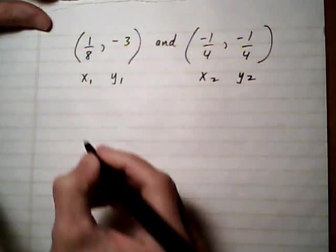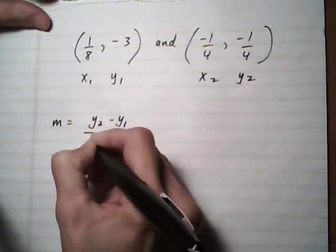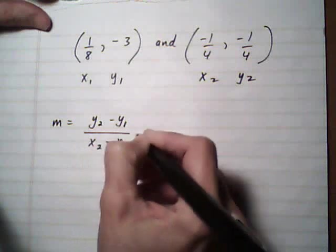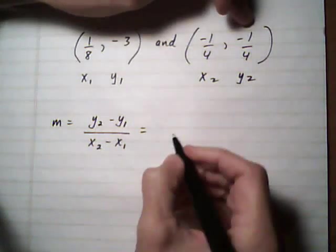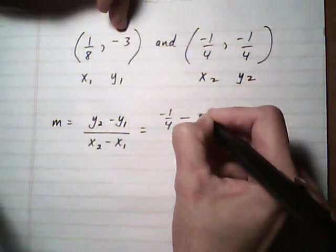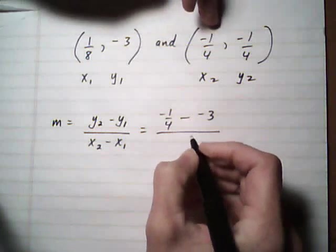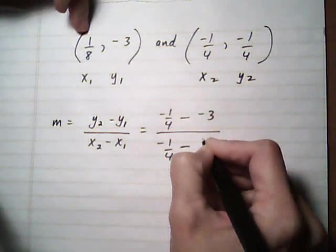And then we'll go ahead and feed it into the slope formula, the change in y divided by the change in x. So let's feed it in. We get minus a quarter for y2. Take away y1 is minus 3, over x2, minus a quarter, minus one eighth.